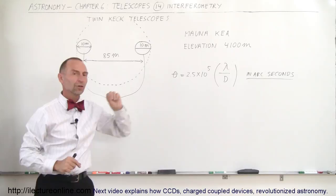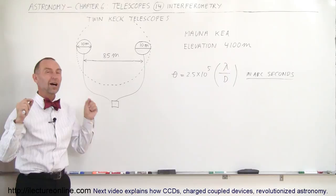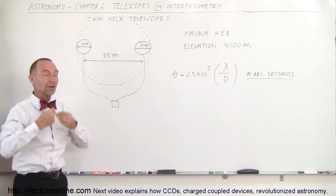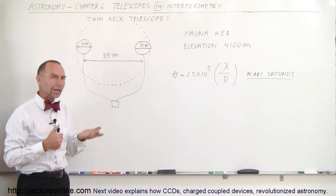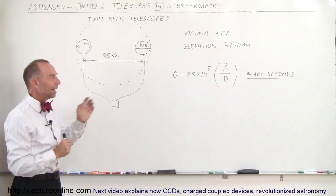In some cases we actually have computers that work on different continents at the same time, looking at the same image linked via computer and the internet, processing the images together to have very high resolution. We use that usually for radio telescopes, but we could also use it for visual telescopes. It's all about sharpness of the image and the angle of resolution.